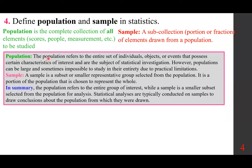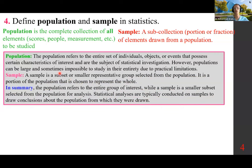The population refers to the entire set of individuals, objects, or events that possess certain characteristics of interest and are the subject of statistical investigation. However, populations can be large and sometimes impossible to study in their entirety. A sample is a subset or smaller representative group selected from the population. Statistical analyses are typically conducted on samples to draw conclusions about the population from which they were drawn.